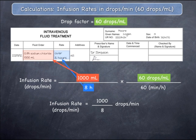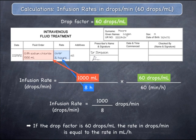If you look closely, you should be able to see that the formula for the infusion rate in drops per minute is now actually the same as the formula for the infusion rate in mils per hour. The only difference is the units you end up with. In conclusion, if the drop factor is 60 drops per mil, the infusion rate in drops per minute is equal to the infusion rate in mils per hour.